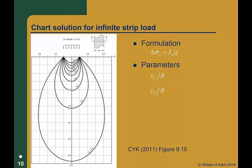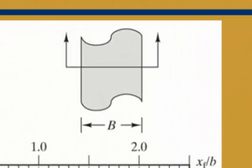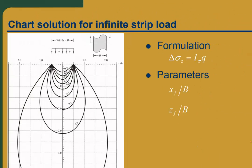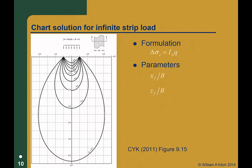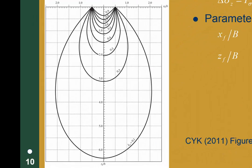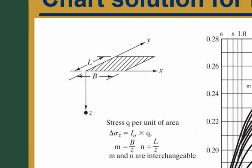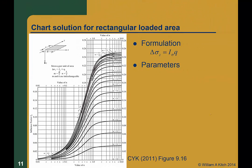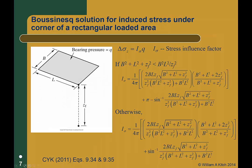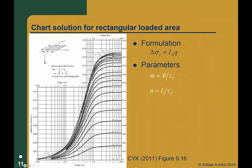There are chart solutions for other loading conditions. This particular chart is for an infinitely long strip load that might be a good model for a continuous footing. This solution uses the same formulation and parameters as the previous solution for a square area, but note that the stress bulbs plotted are very different. This chart is for the induced vertical normal stress under the corner of a rectangular loaded area. It uses the same formulation as the previous charts, but the parameters are slightly different. m is equal to the rectangle width b divided by z_f, and n is equal to the rectangle length l divided by z_f. The solution you get for this chart will be the same as that you get using the equations shown earlier — the chart is really just a plot of those equations.